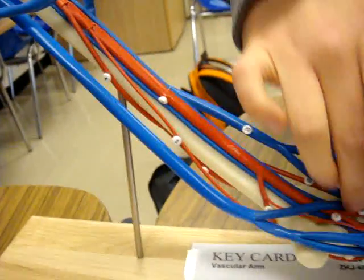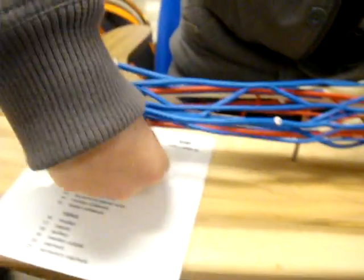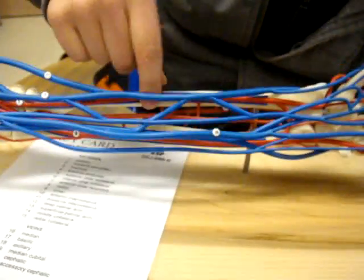This is your ulnar collaterals which are branches. This is still your brachial. So then this goes to your ulnar artery and your radial artery.